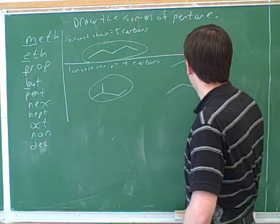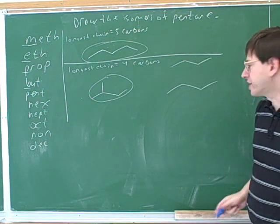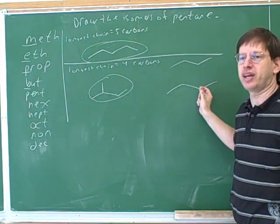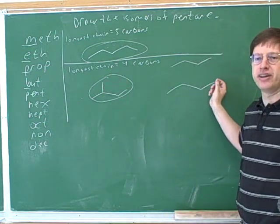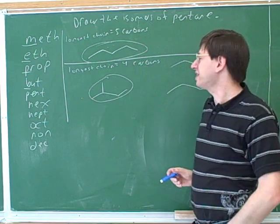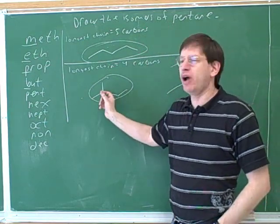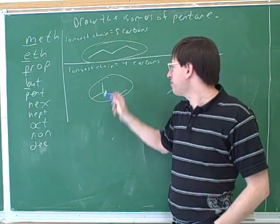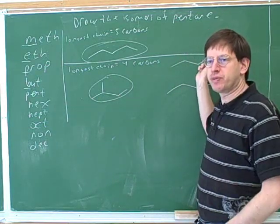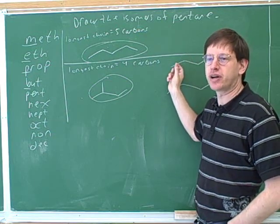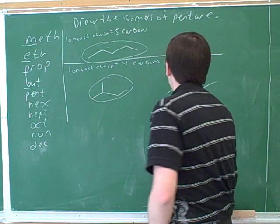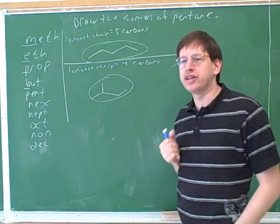Are there any other places I could put that carbon? Well, I tried putting it here. That didn't work. I put it here. That gave me this. I tried putting it here. That gave me a repeat. So could I put it here? No, because that would just take me back to five. Actually, once you kind of pass the halfway point, you can kind of stop. Once we pass the halfway point, it's pretty obvious that anything that we do to these two carbons is just going to reproduce what happened when we put the fifth carbon on one of these two carbons. So, so far we've only got two isomers.